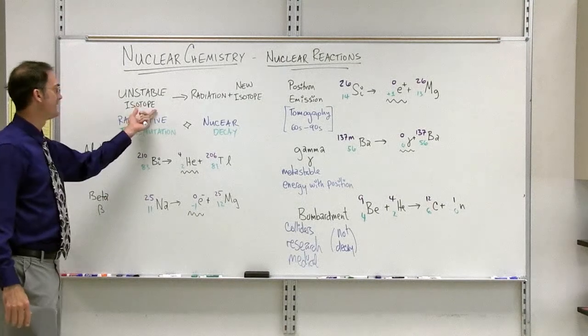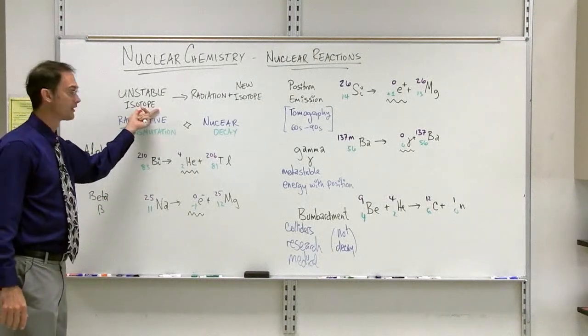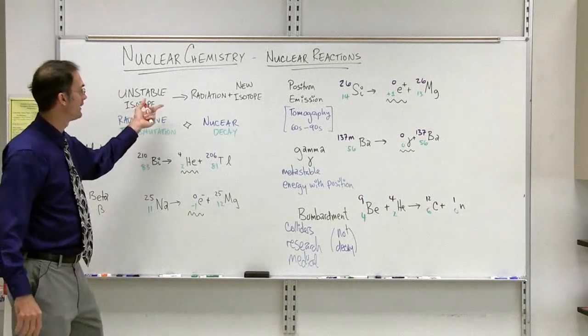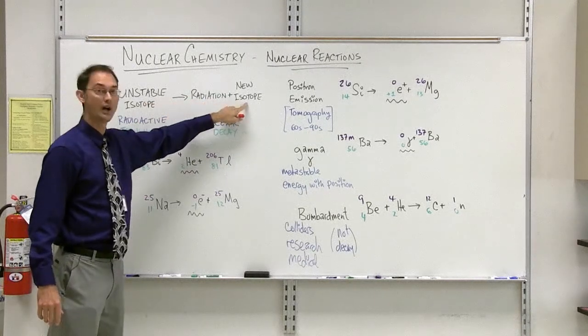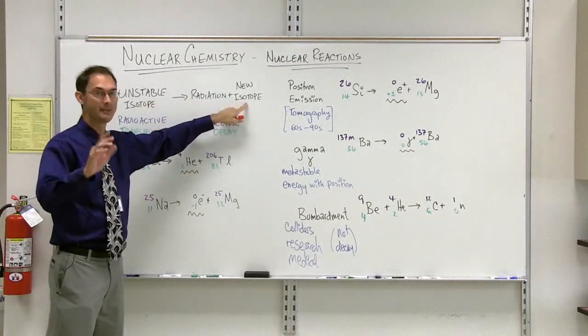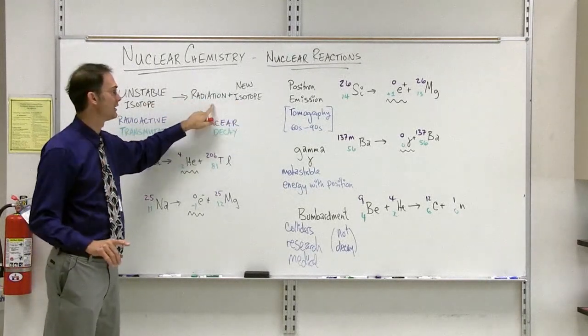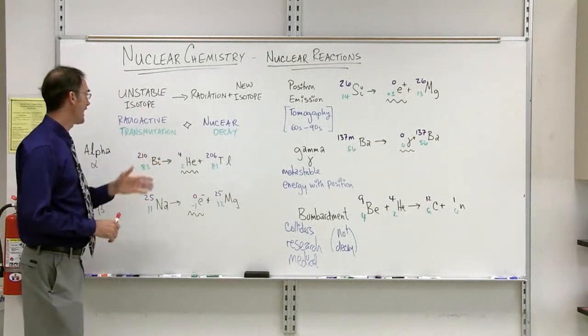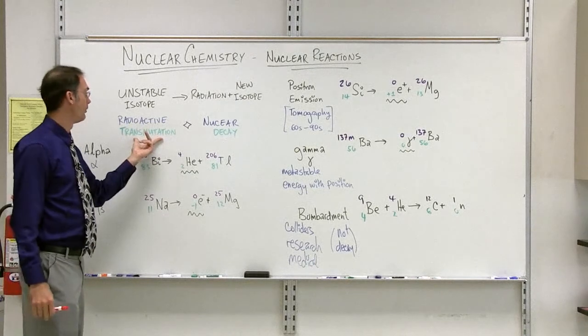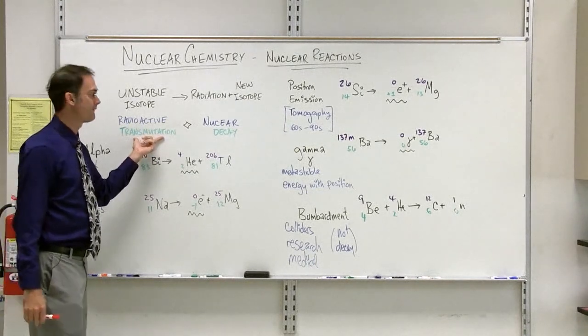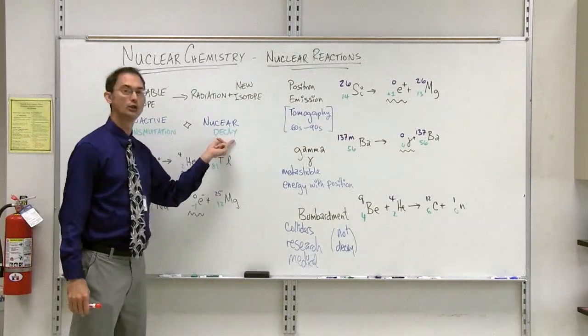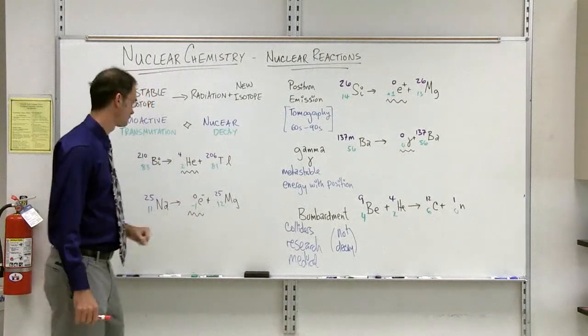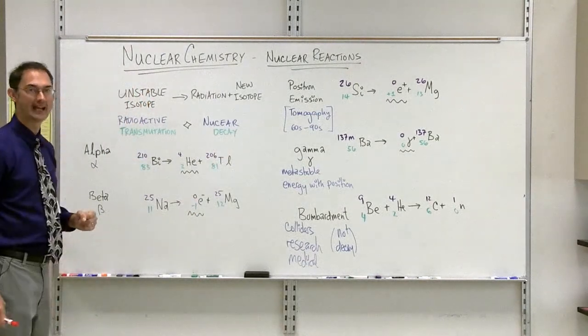First of all, all of these reactions will begin with an unstable isotope. The unstable isotope will then be reduced to a new isotope, which may or may not be stable itself, plus some type of radiation. This process is called either transmutation, or radioactive transmutation, or decay, or nuclear decay. There are a number of examples.